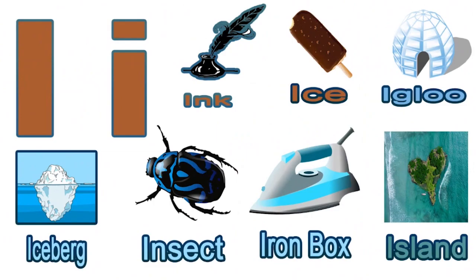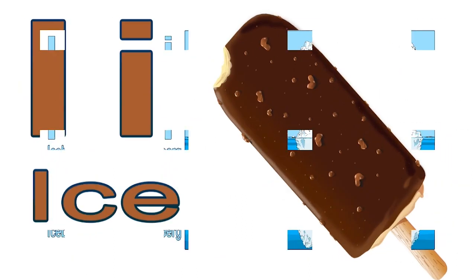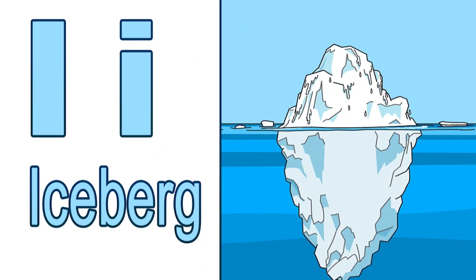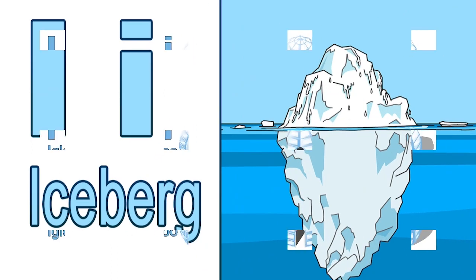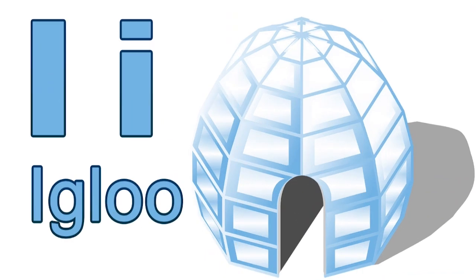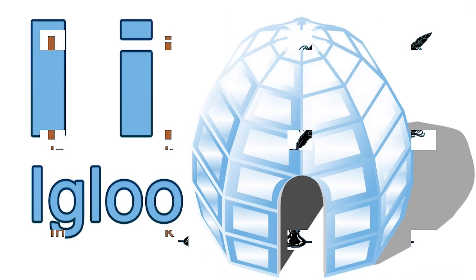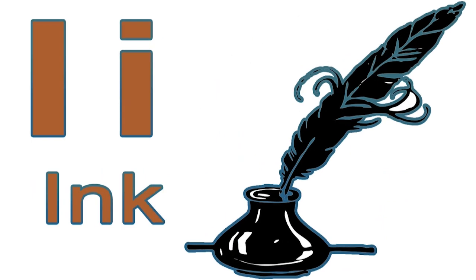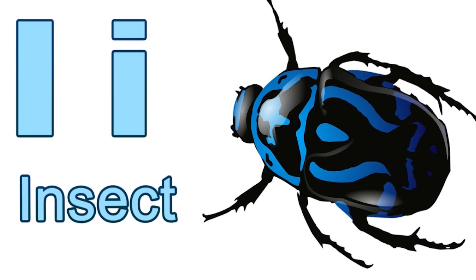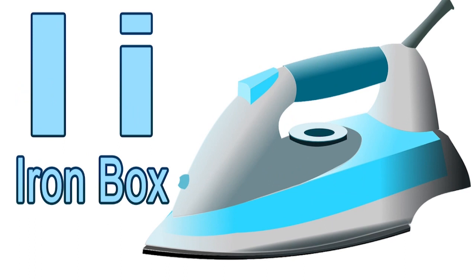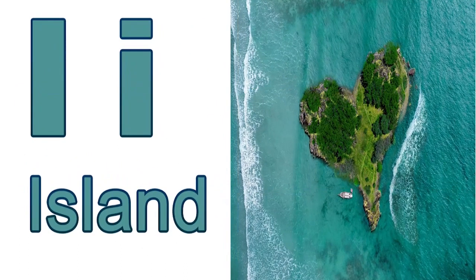Let us start with I. I for ice. I for iceberg. I for igloo. I for ink. I for insect. I for iron box. I for island.